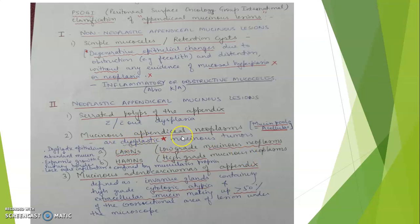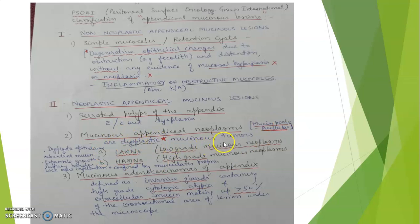Mucinous appendiceal neoplasms secrete mucin — pools of mucin — but the pools are usually acellular. This mucin is produced by the dysplastic mucinous epithelium. There is expansile growth with a pushing border, lack of overt infiltration, and the lesion is confined by the muscularis propria.